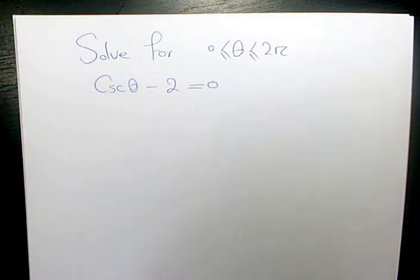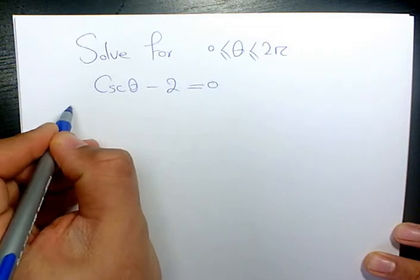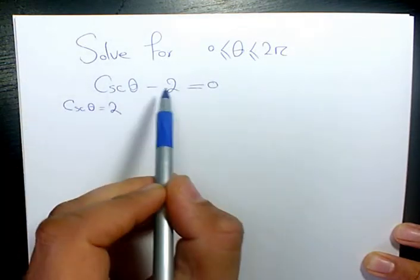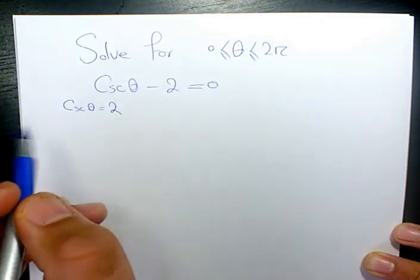So the first thing I want to do is isolate it for cosecant theta. I will write cosecant theta equals 2, because you need to move negative 2 to the right-hand side.